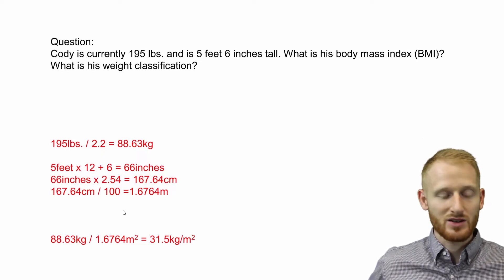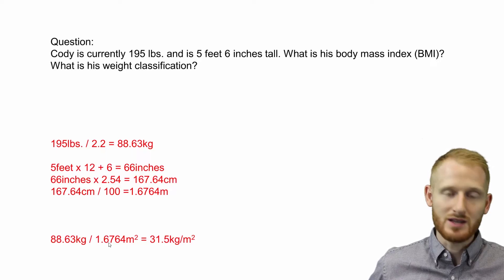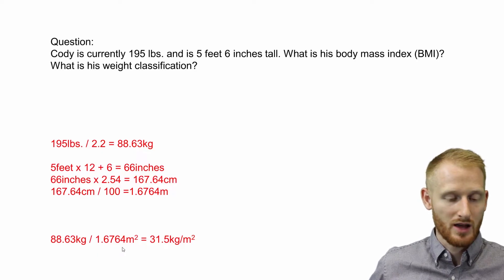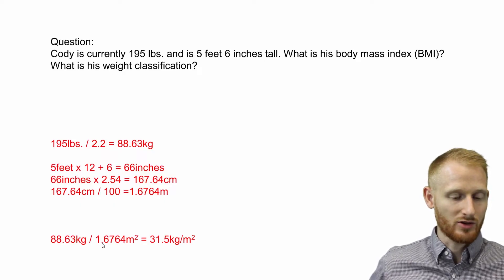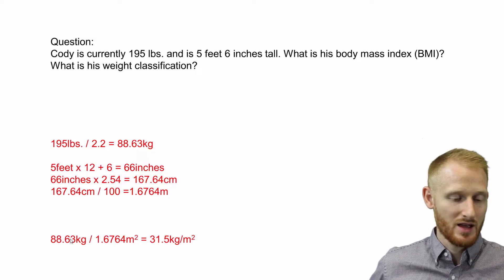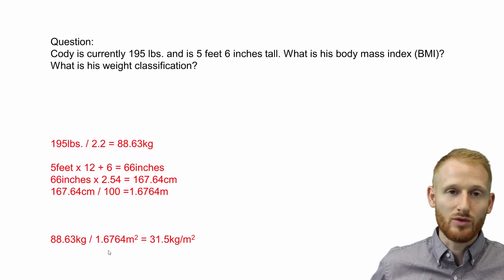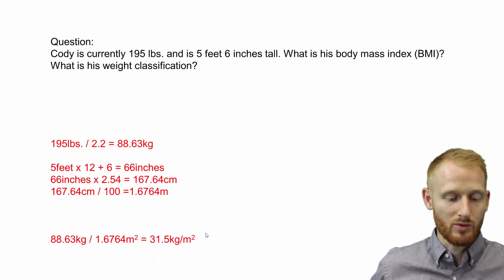The BMI calculation is very straightforward. You take the body mass in kilograms and divide that by the square of the height in meters. So that is 88.63 divided by 1.6764 squared. Don't forget order of operations — you need to do the squaring first, multiplying 1.6764 by itself, and then divide that into 88.63. That gives you 31.5 kilograms per meter squared, which is the BMI.